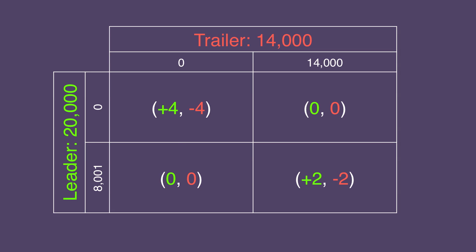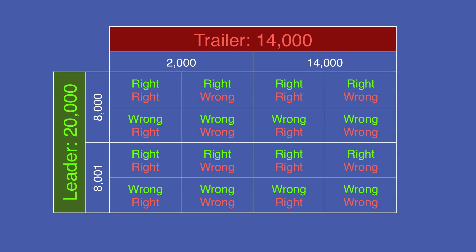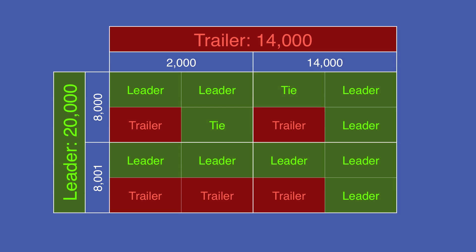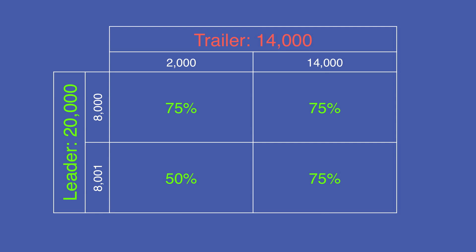Now I'll use this concept to illustrate why I advocate for wagering to tie as the leader. We'll assume here that it's a regular game, so a tie is as good as a win. Let's compare outcomes for the leader between potential wagers of 8,001 and 8,000 against the trailer's wagers of 2,000 and 14,000. Here are the totals for each combination of wager and response. We see there are two circumstances in which the two players will tie — and remember, a tie is as good as a win, so we'll color those green. Let's turn each box into a percentage probability that the leader will win. All are 75%, except when he wagers that extra dollar — it's only 50% in that case. So if the trailer wagers 2,000, the leader will prefer to wager 8,000 instead of 8,001. Since he has the same probability of returning either way if the trailer wagers 14,000, he can never do better by wagering 8,001, only worse. Therefore, 8,001 is dominated by 8,000.